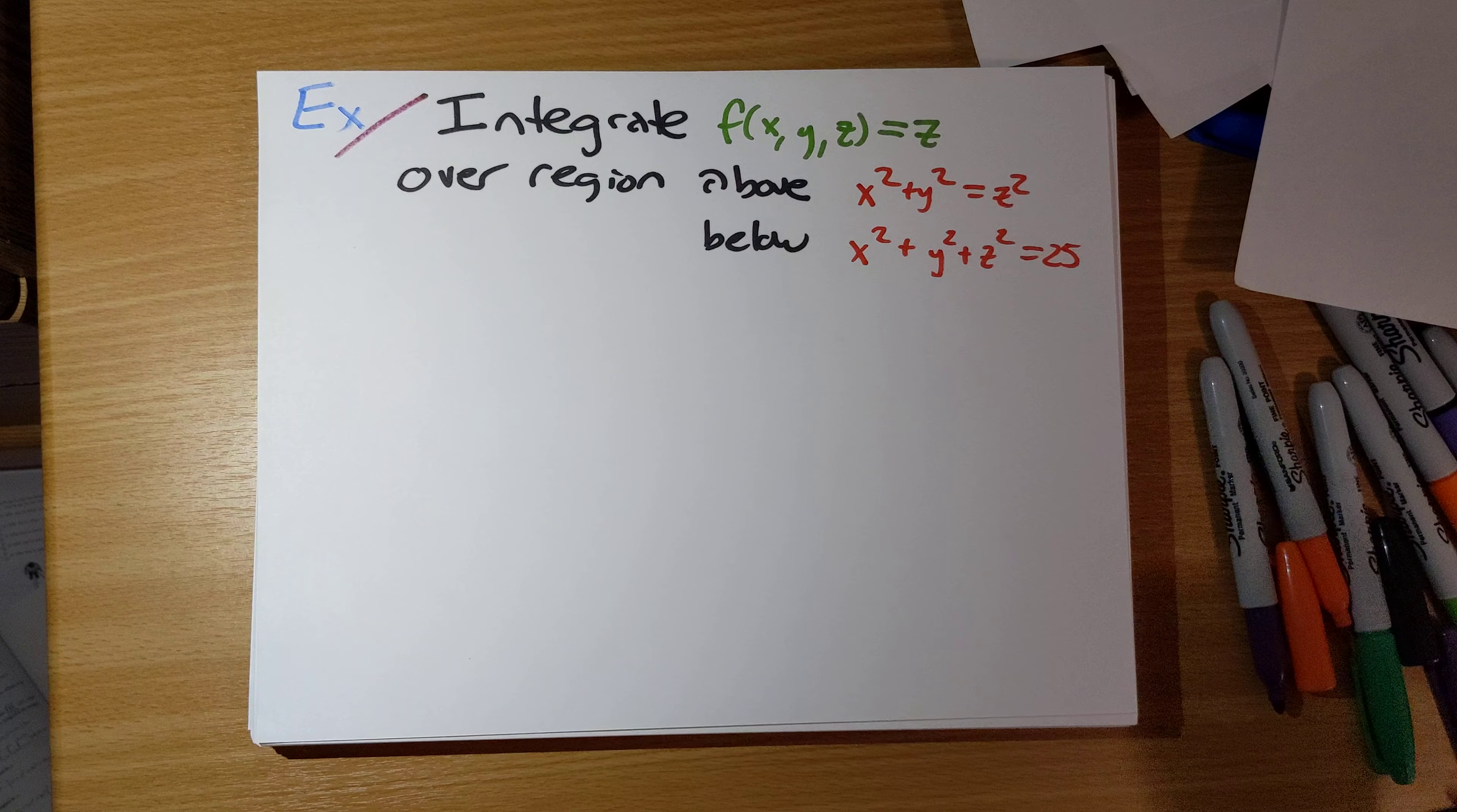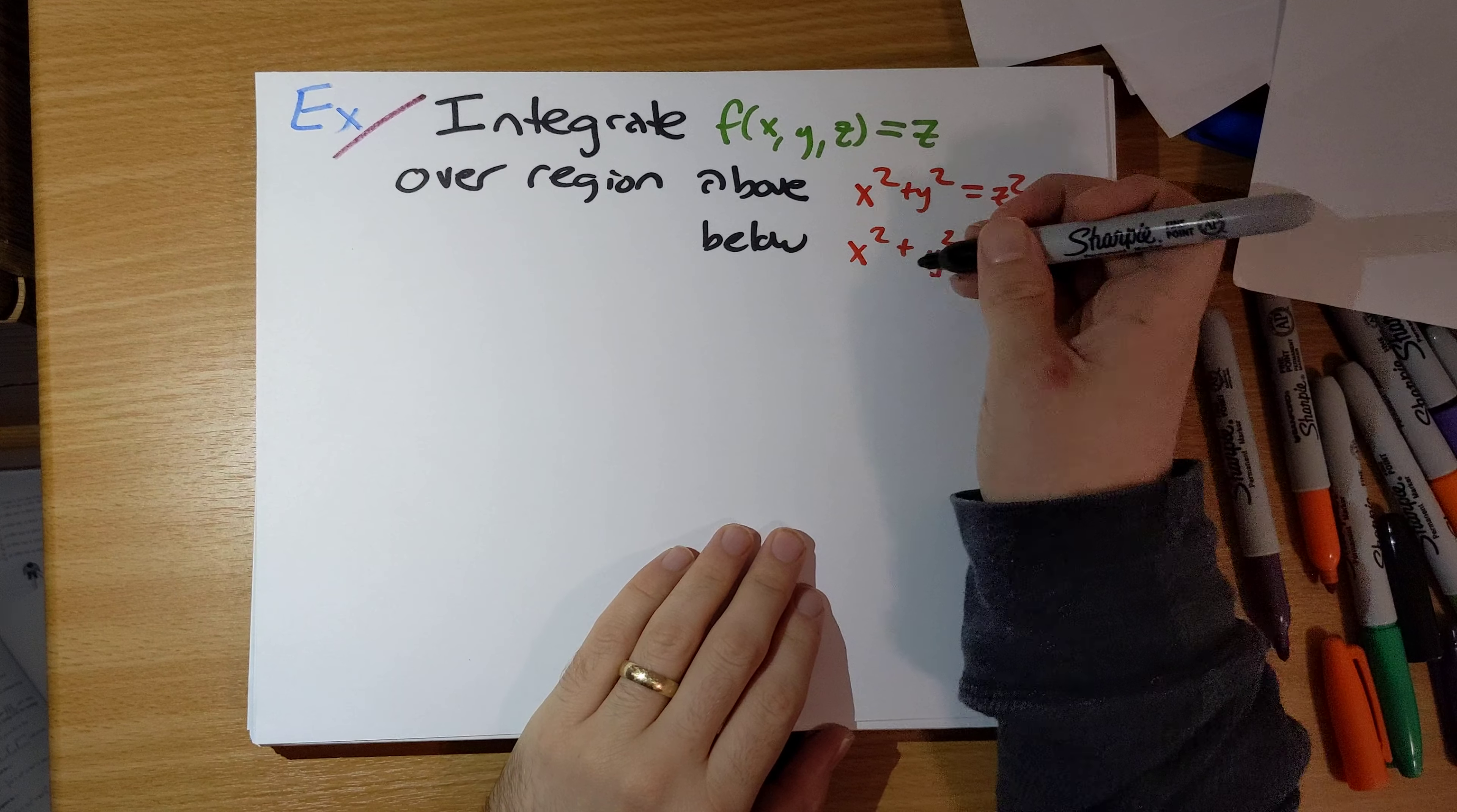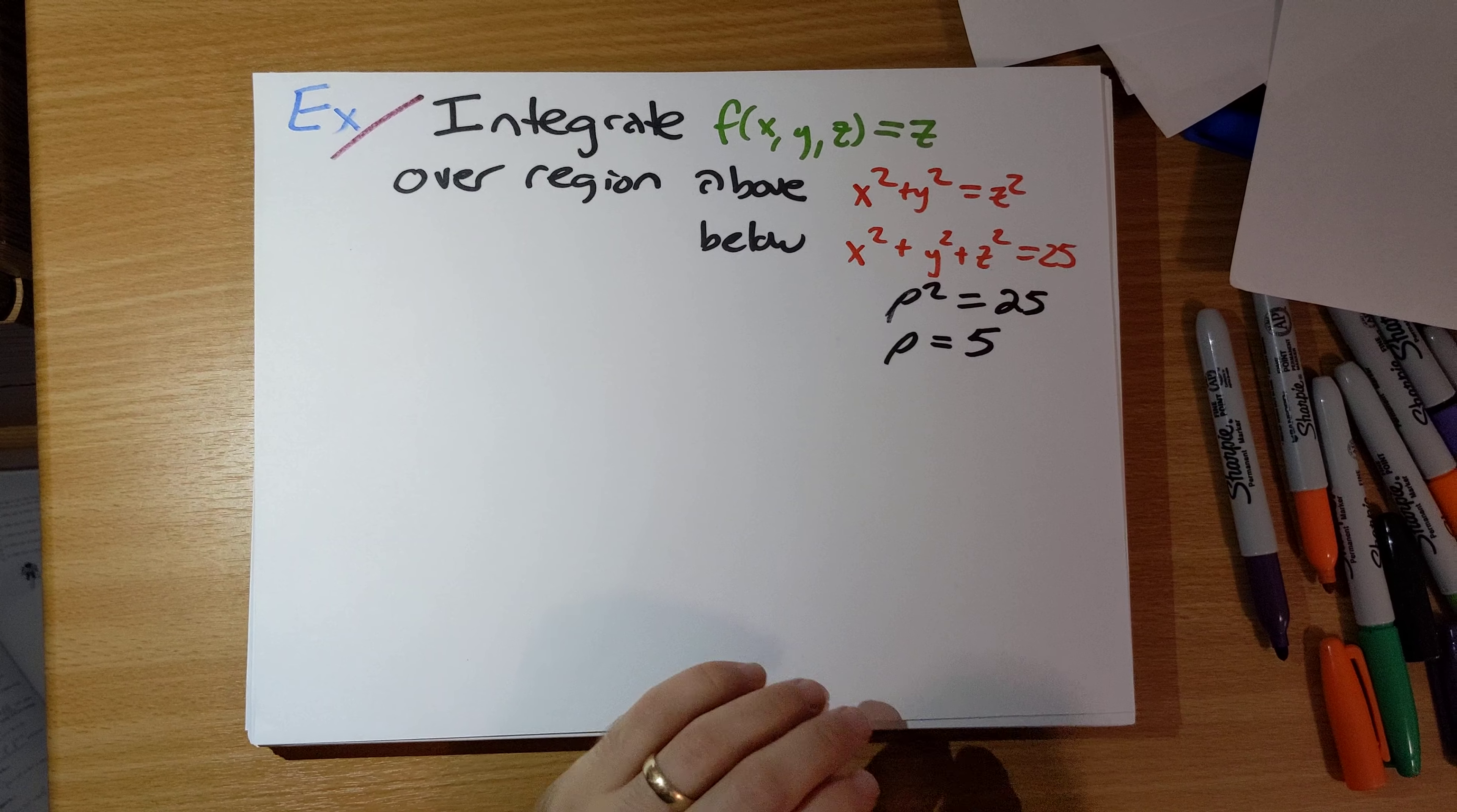Let's see, what do we know? So x squared plus y squared plus z squared, that is just going to be rho squared. So this curve really here is rho squared equals 25, or rho equals 5. All right.